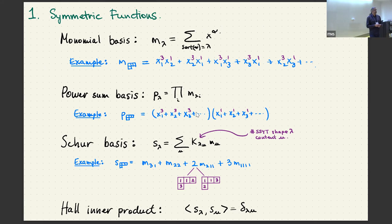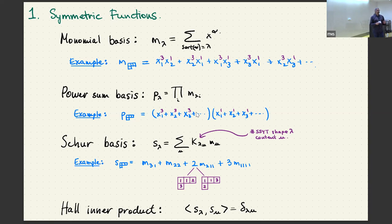Next we have the power sum symmetric functions, which are basically just products of monomial symmetric functions. Specifically, a power sum symmetric function is a monomial symmetric function where the partition has just one part. So p_lambda is the product of the monomial symmetric functions associated to the individual parts of lambda — for example, p_{3,1} is m_3 times m_1.